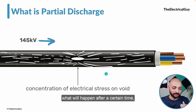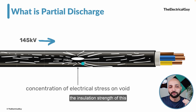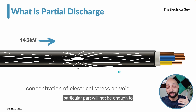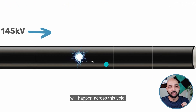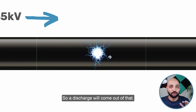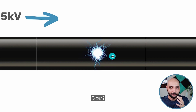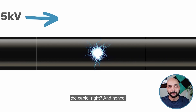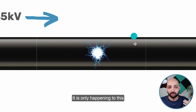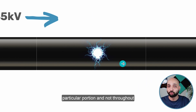After a certain time the insulation strength of that particular part will not be enough to handle the electrical stresses, and as a result there will be a breakdown across this void — a discharge will come out of it. This discharge is happening only on this particular portion and not throughout the cable, and hence it is called partial discharge.